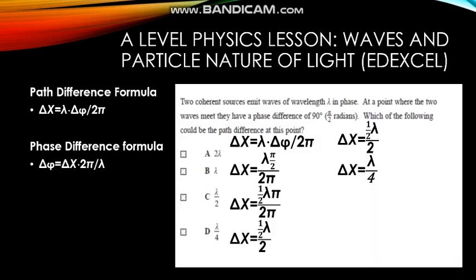To get a better understanding of the relationship between both phase difference and path difference, I figured it would be useful to take a look at some past paper EDEXCEL questions. The following question states that two coherent sources emit waves of wavelength lambda in phase. At a point where the two waves meet, they have a phase difference of 90 degrees, or π/2 radians. Which of the following is the path difference at this point? We use our path difference formula, which is given by lambda multiplied by the phase difference divided all by 2π.